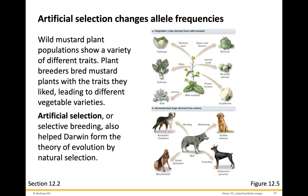Artificial selection changes allele frequencies. If we look at a wild mustard plant, populations show a variety of different traits. Plant breeders bred mustard plants with traits they liked, leading to different vegetable varieties. Artificial selection or selective breeding also helped inform the theory of evolution by natural selection. You see this with dogs, where you take several species of dogs and make new species out of them.